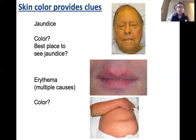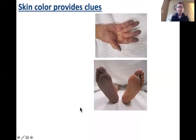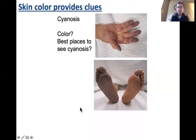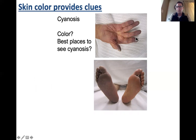Erythema is a redness of the skin that can be caused by rashes, working out, or fever. The color with erythema is red, as seen around the lips and on the stomach with a rash. Another skin color change is cyanosis, where the skin turns blue — usually an indication of poor circulation in that part of the body. This affects older individuals more typically, or those with circulatory disorders, and is especially visible in the extremities like the fingertips and feet.